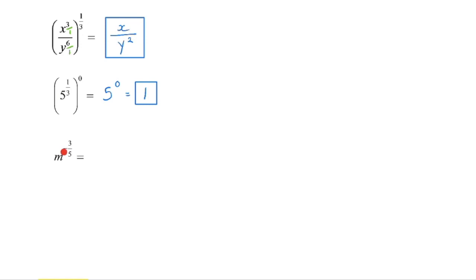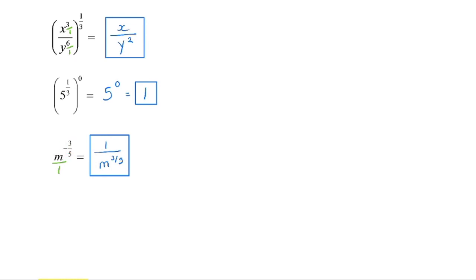In the last one here, we have a negative exponent of negative three-fifths. To eliminate a negative exponent, we reciprocate the base. Right now we have M over one; we flip that and get one over M. The exponent, which was negative three-fifths, now becomes positive three-fifths. Be very careful — it is the base that we are reciprocating, not the exponent. The three-fifths stays three-fifths; it just changes from negative to positive. Reciprocating the base changes the sign on the exponent.